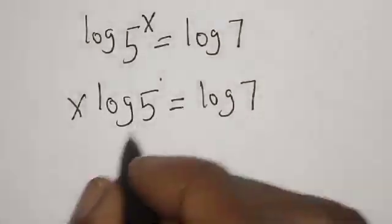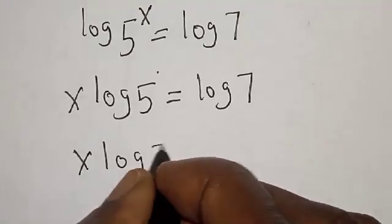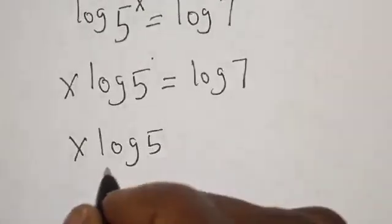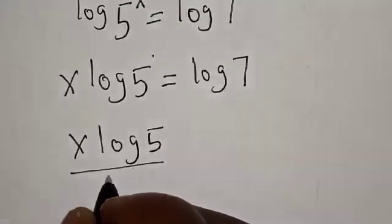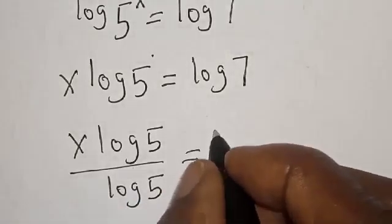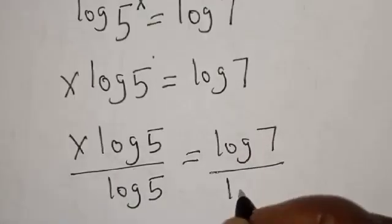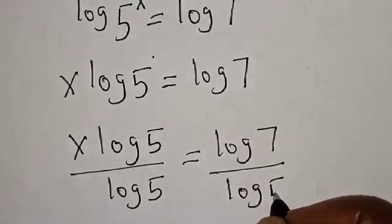Let's divide both sides by log 5. Now, x log 5 over log 5 is equal to log 7 over log 5.